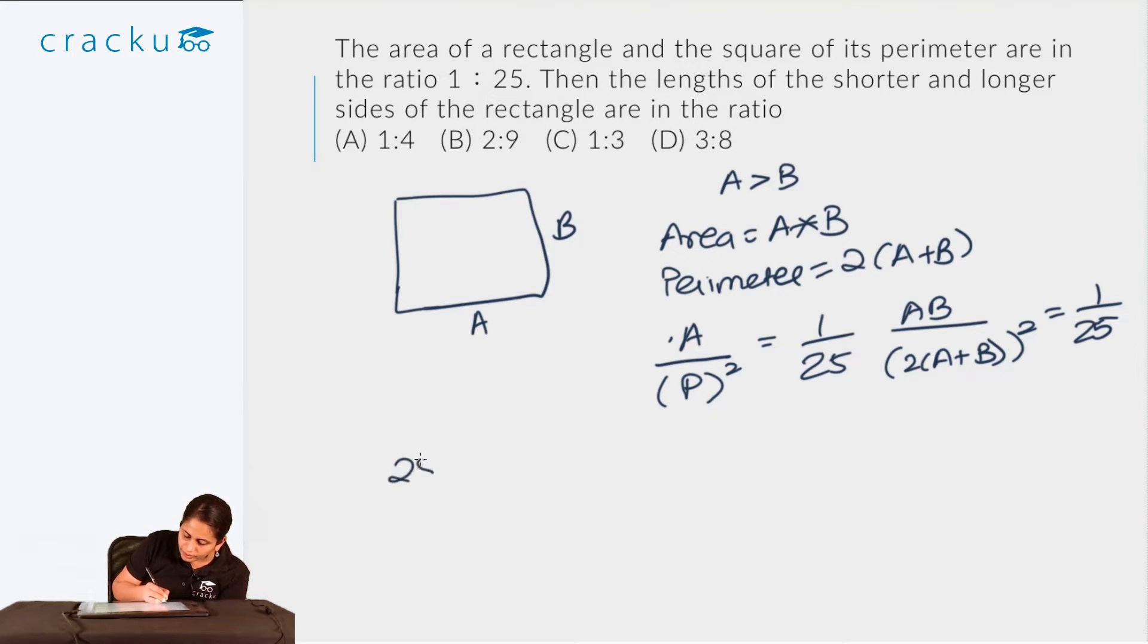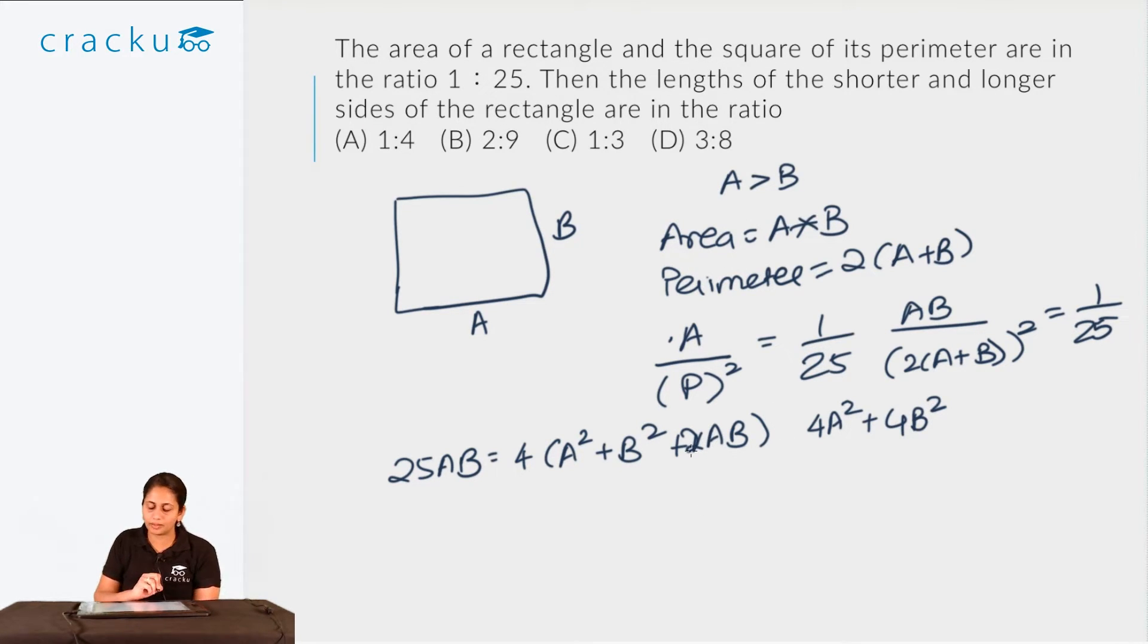So I can say that 25 AB is equal to 4A square plus B square plus 2AB. So I can solve this and I get 4A square plus 4B square. If I take the minus 25 AB on the other side, I get minus 17AB minus 16AB is equal to 0.